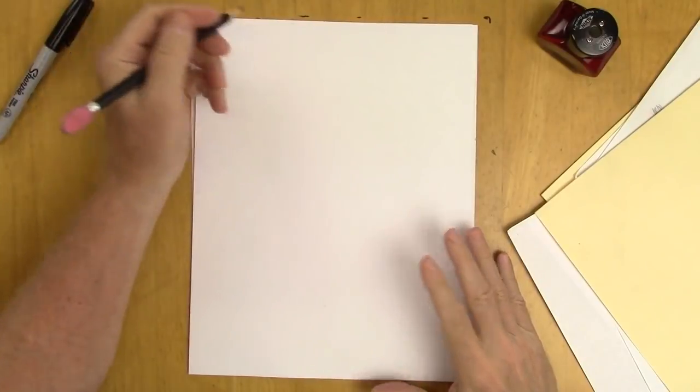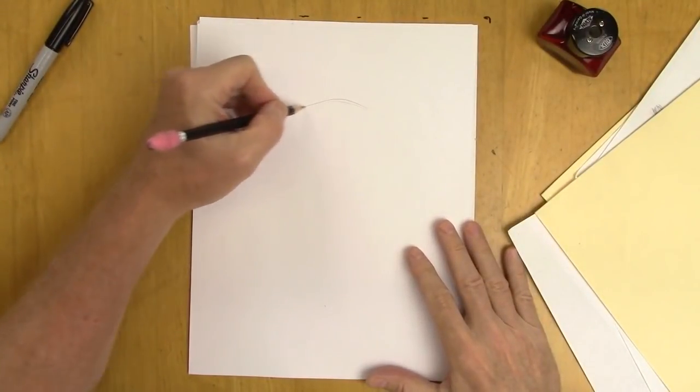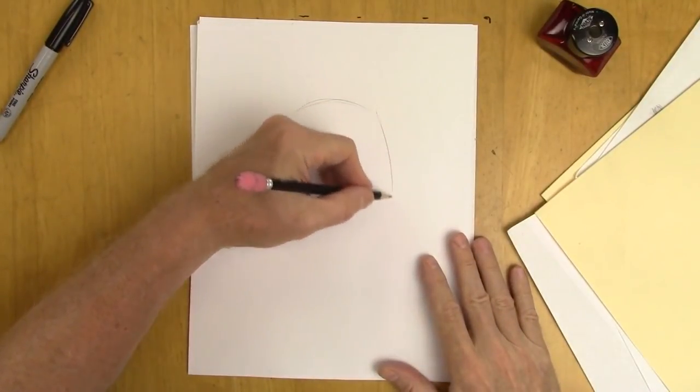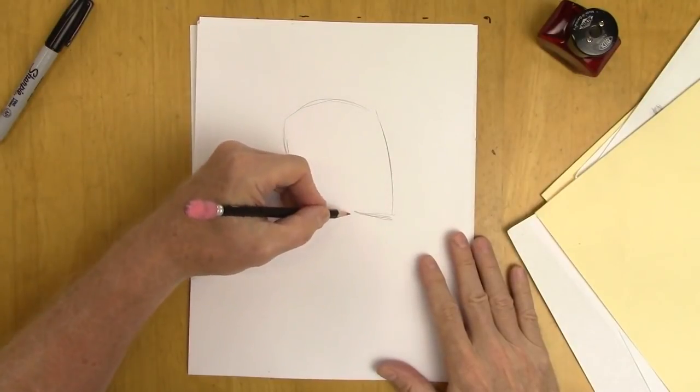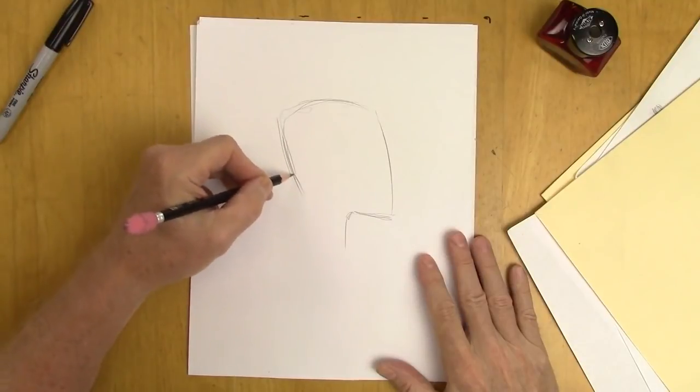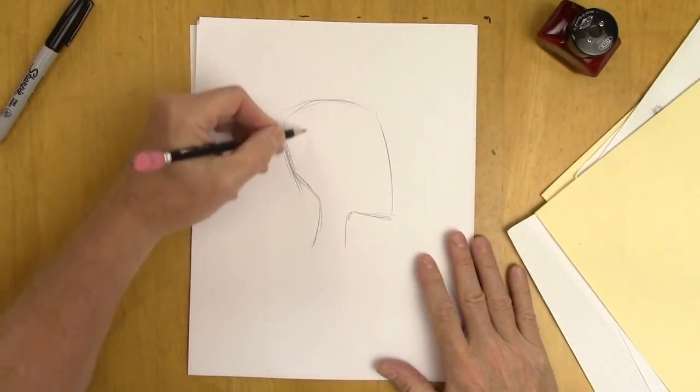A lot of times when we create a character from scratch, we think we have to do a lot of different work on the features like the eyes and the nose to make it look different. But often it's one big change that's needed, and everything else will just fall into place.